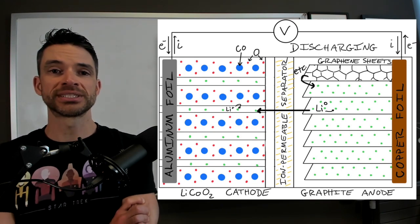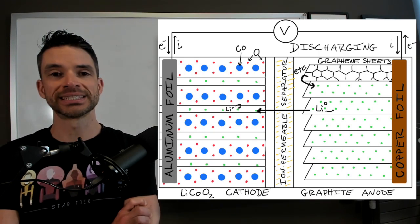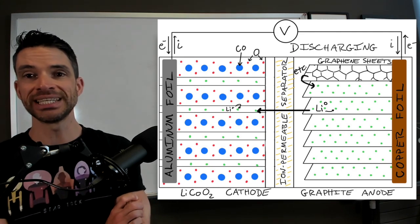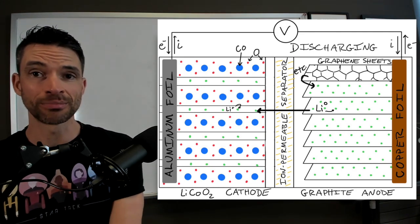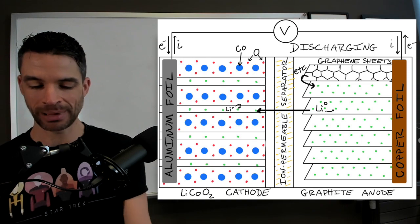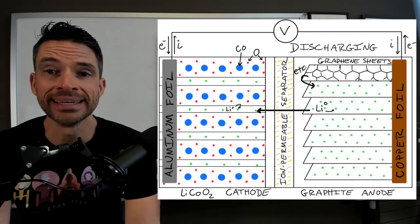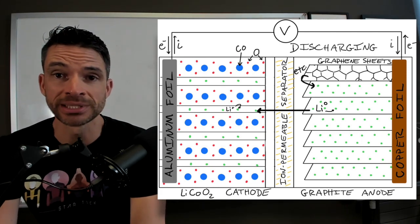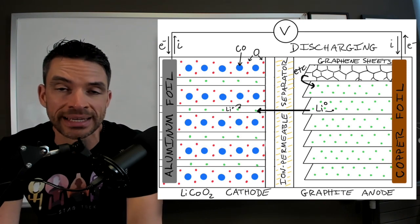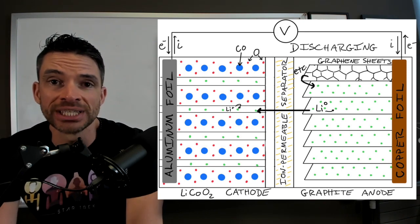So the anode material is usually graphite, which consists of these graphene sheets that are stacked like pancakes. And the lithium atoms, so lithium zero, can slide easily in between those graphene sheets.